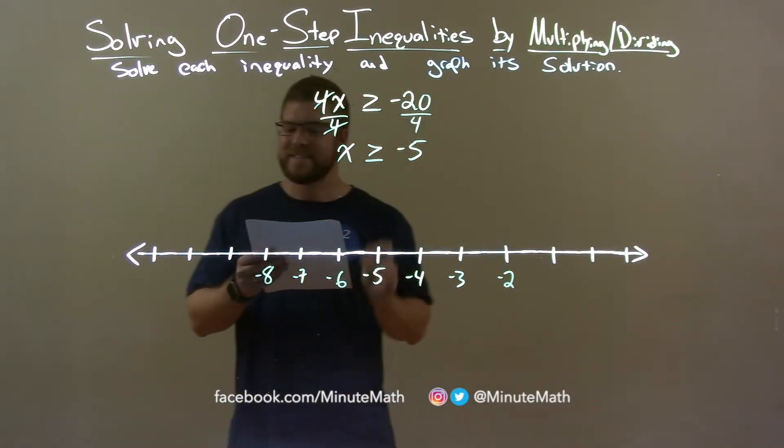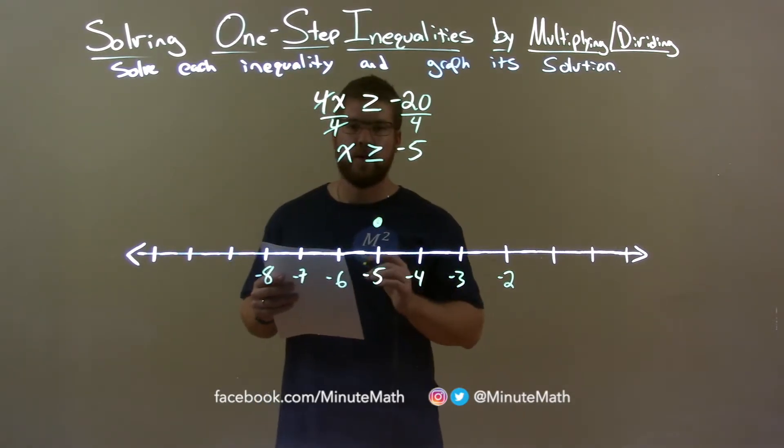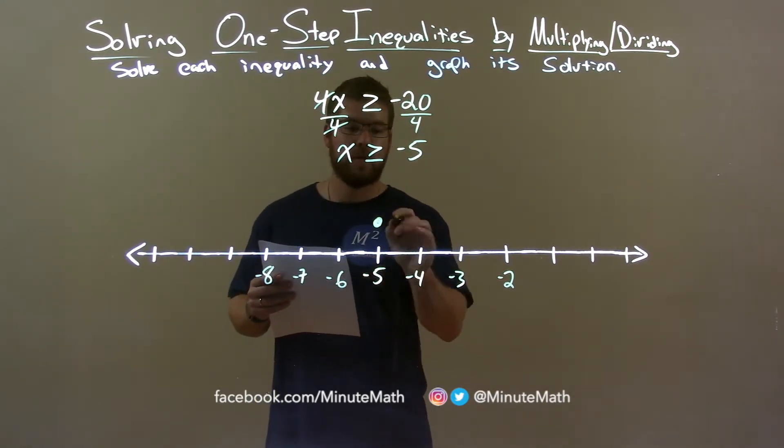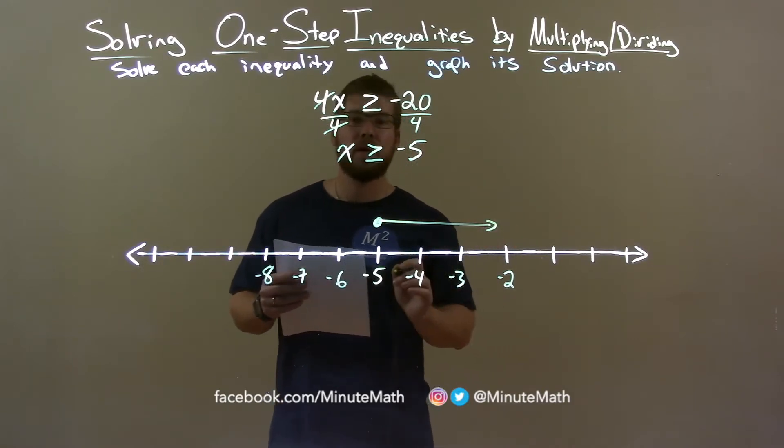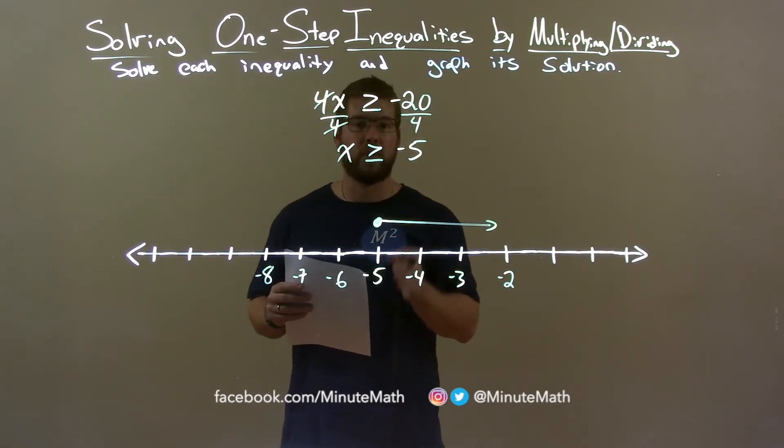Alright, well x can equal negative 5, so that puts a closed circle right there at negative 5. x is also greater than negative 5, so the arrow goes to the right, and there we have it. Our graph matches our final answer, x is greater than or equal to negative 5.